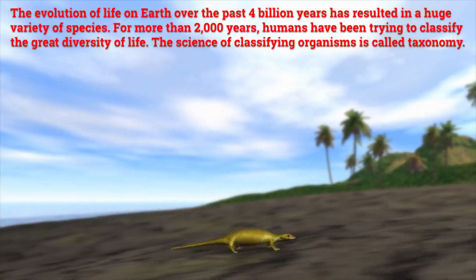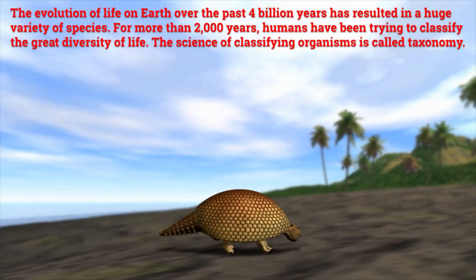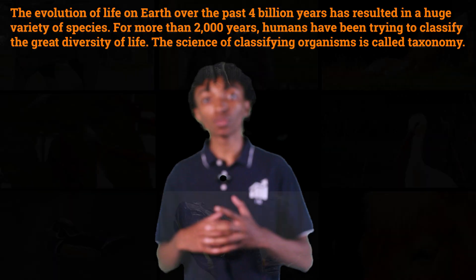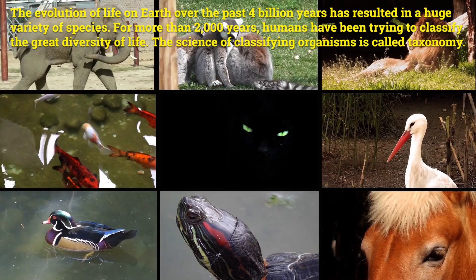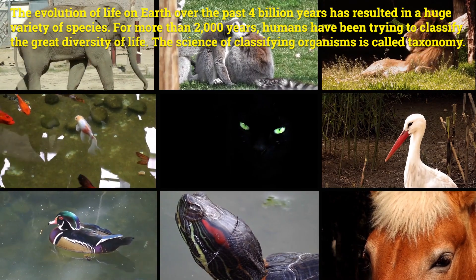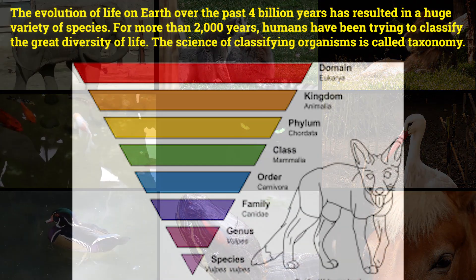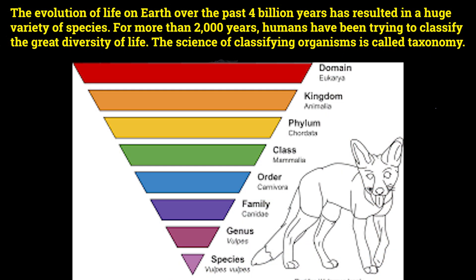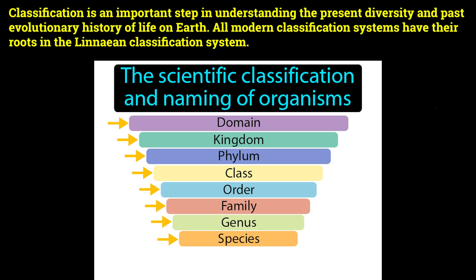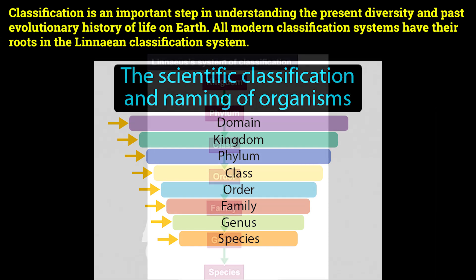The evolution of life on Earth over the past four billion years has resulted in a huge variety of species. For more than 2,000 years, humans have been trying to classify the great diversity of life. The science of classifying organisms is called taxonomy. Classification is an important step in understanding the present diversity and past evolutionary history of life on Earth.